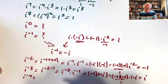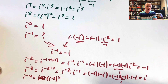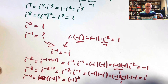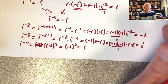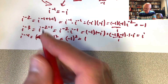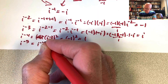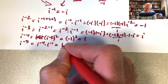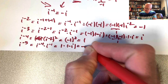i to the negative four: thinking of it as i to the negative two squared, we get negative one squared, which is positive one. And i to the negative five should be the same as i to the negative one — let's verify: i to the negative five is i to the negative four times i to the negative one, which is positive one times negative i. Yes, i to the negative five is negative i, confirming the cycle continues.